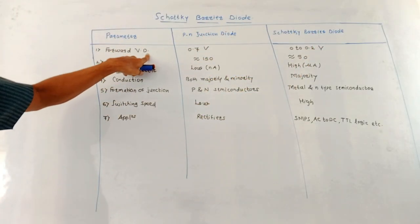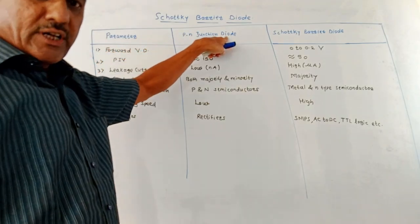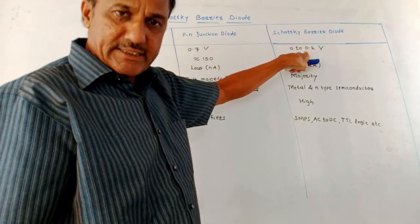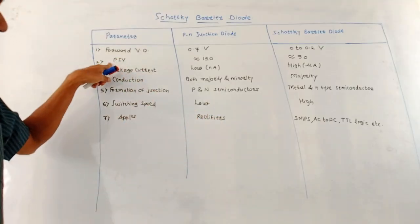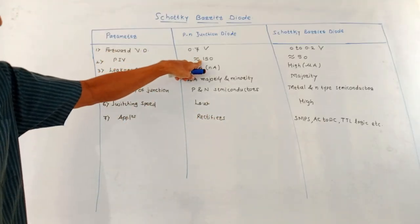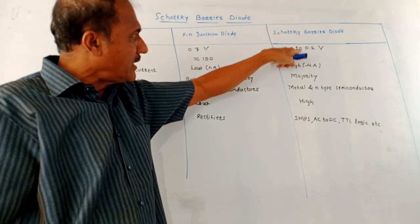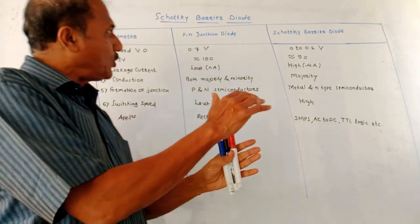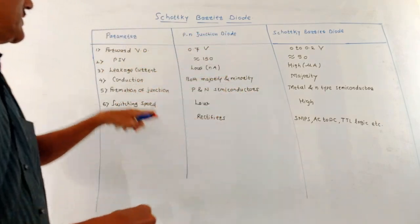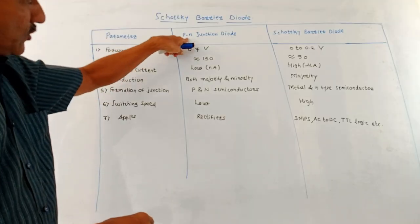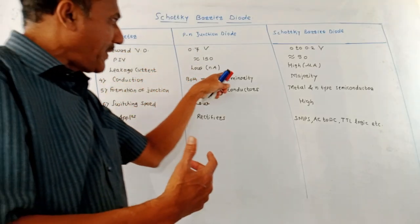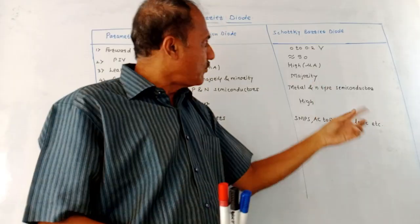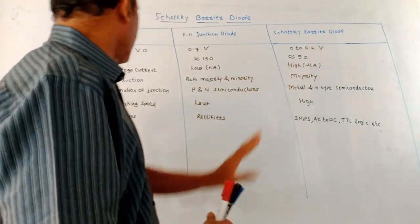The first parameter is forward voltage drop. For a PN Junction Diode using silicon material, it is 0.3 volts, whereas for the Schottky Barrier Diode it is in the range of 0 to 0.2 volts. The PIV rating of a PN Junction Diode is around 150, whereas for the Schottky Barrier Diode it is 50, because the breakdown voltage for the Schottky Barrier Diode is less. Leakage current in a normal PN Junction Diode is low, in the range of nano amperes, whereas in the Schottky Barrier Diode it is comparatively high, in the range of micro amperes.